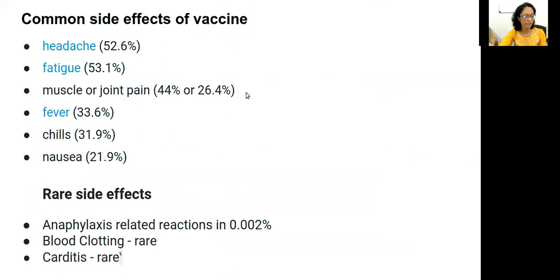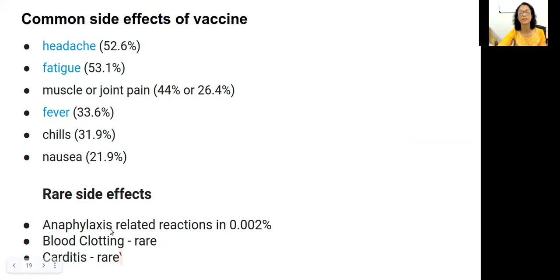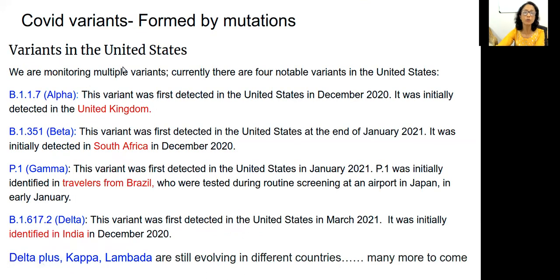Common side effects of vaccines include headache, fatigue, muscle pain, joint pain, fever, and local injection site pain. The rarest side effects are anaphylaxis, blood clotting, and carditis — these are really rare complications. Nobody should focus on these rare side effects because the benefits always outweigh the side effects.